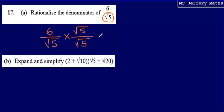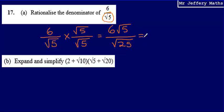What this does is it rationalises the denominator — it gets rid of that root 5 on the bottom. So we get 6 multiplied by root 5 on the top, and root 5 multiplied by root 5 gives us root 25. Tidying this up: 6 root 5 over the square root of 25, which is just 5. Denominator rationalised — that number on the bottom of the fraction is now a whole number.